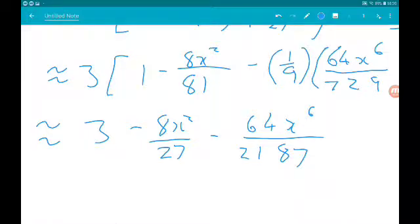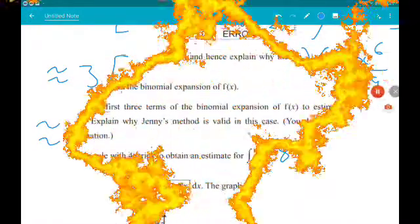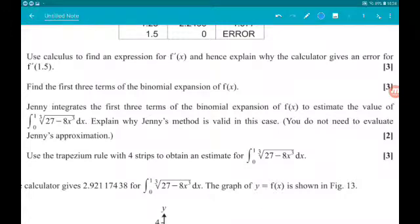So there is our expansion. Okay, then for part three, Jenny integrates the first three terms of the binomial expansion of f(x) to estimate the value of the integral from 0 to 1 of the cube root of 27 minus 8x cubed. Explain why Jenny's method is valid in this case. We do not need to do the integration.